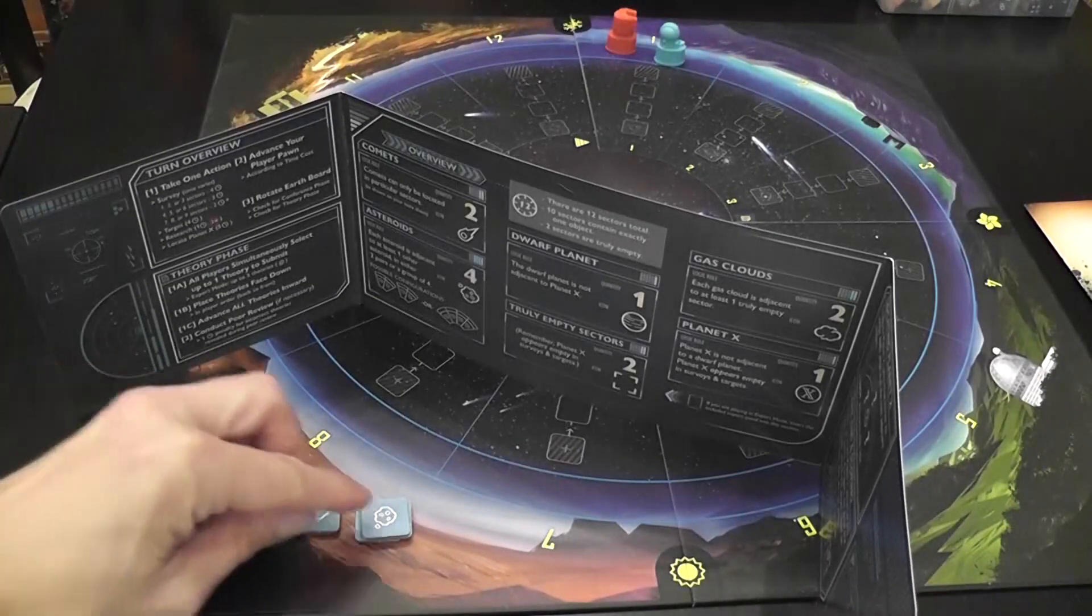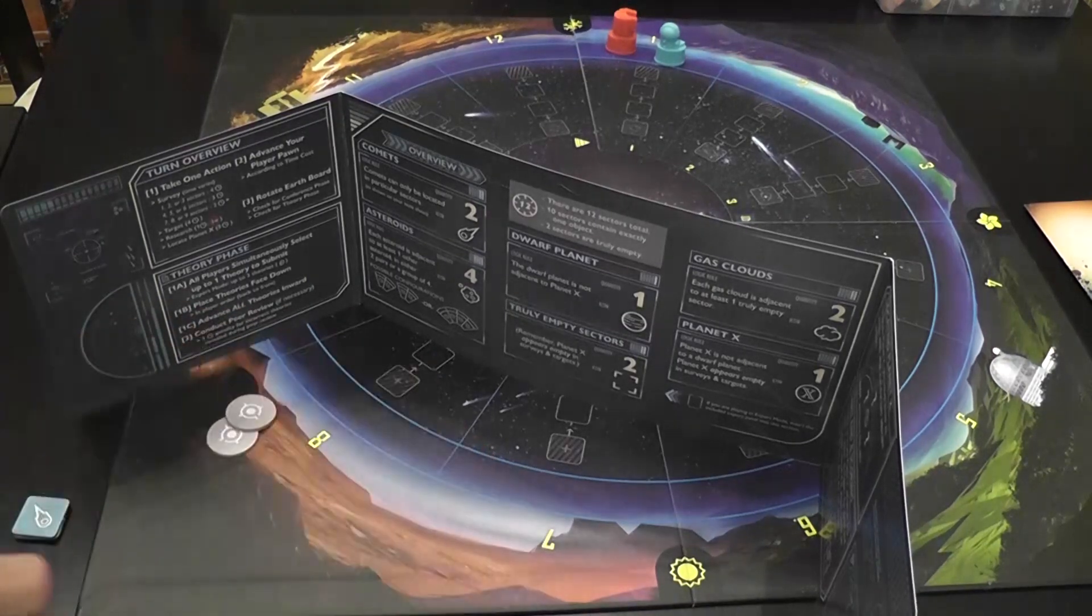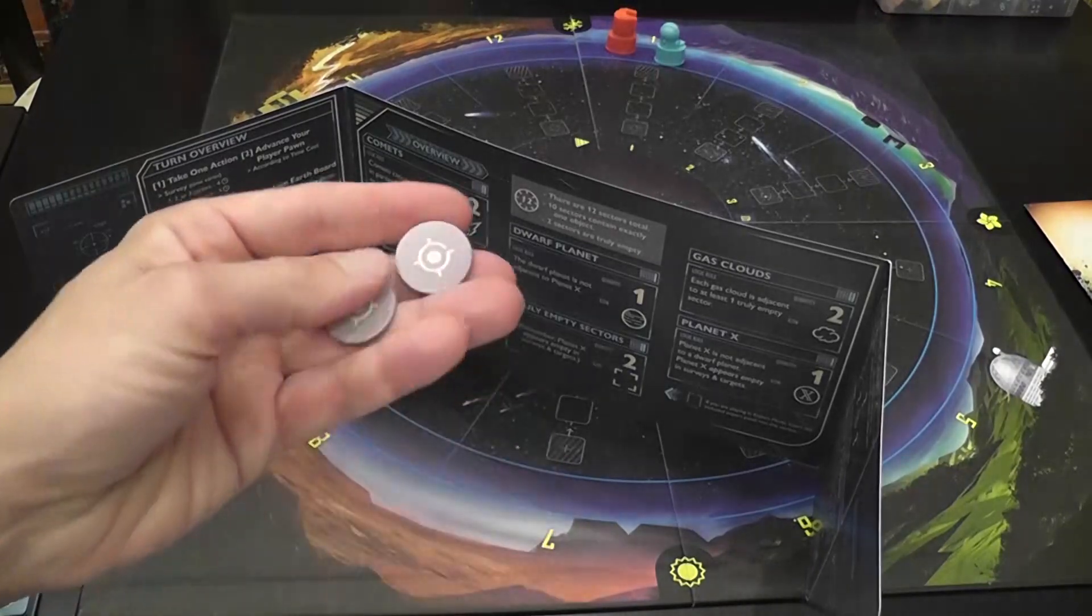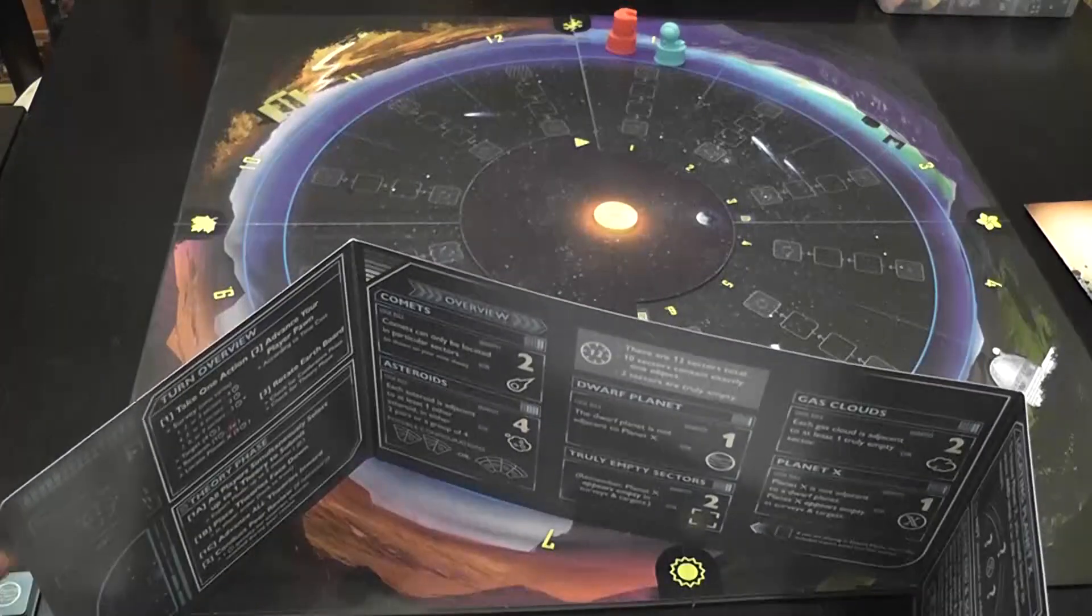Each player will have a screen behind which they hide their personal cheat sheet that they will use to take notes and also to cross out things, to eliminate things, to get progressively a sense of where the fabled Planet X might be. Each player also has a set of tokens that are used to submit papers to journals waiting for peer review, and two target tokens to perform the target action. They can be performed only twice per game.